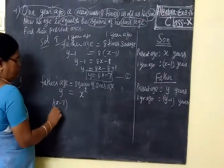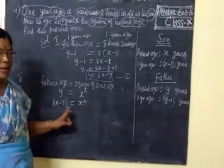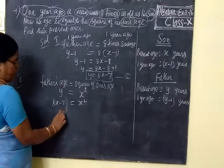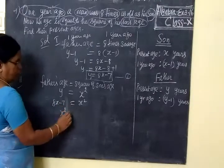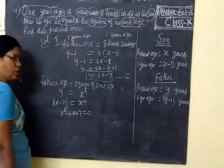8x minus 7 is equal to x squared. One side the sign change. So x squared minus 8x plus 7 equal to 0.